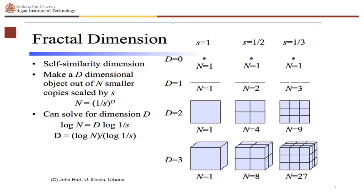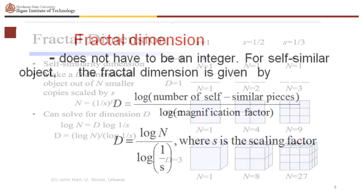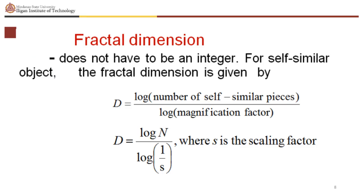One can solve for dimension d as d equals the logarithm of n over the logarithm of one over s. For self-similar objects, the fractal dimension is given by d equals the logarithm of number of self-similar pieces divided by the logarithm of the magnification factor.